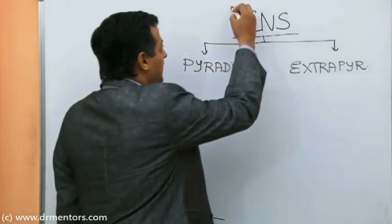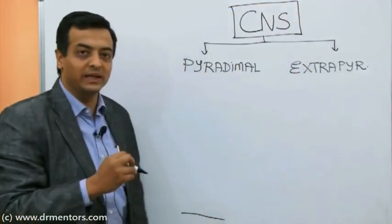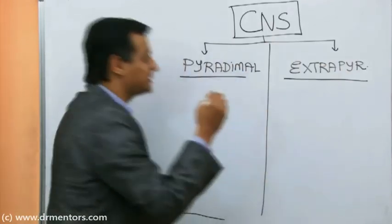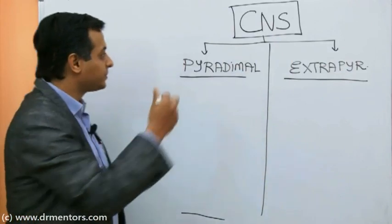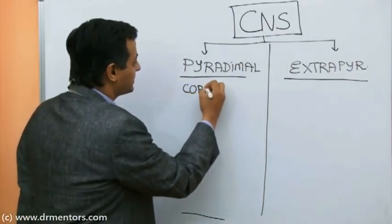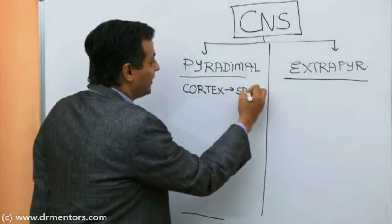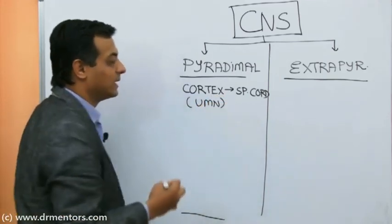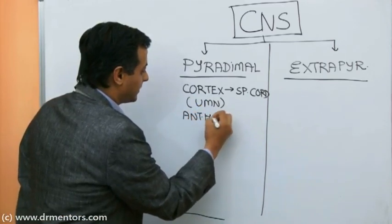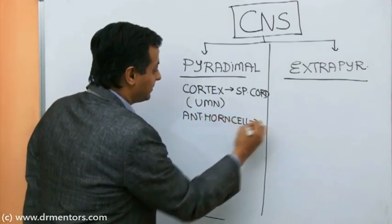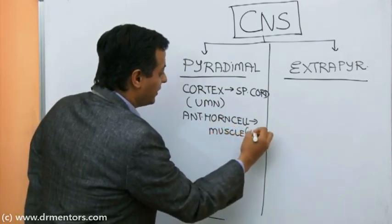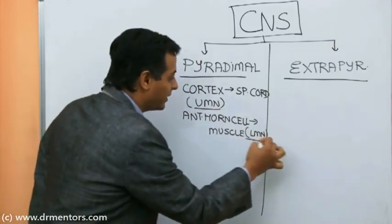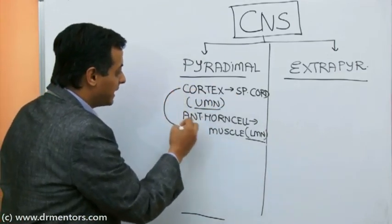So let me put you in the clinician's shoes. The patient has come with a focal neurological deficit. The first step is to differentiate: is the lesion in the pyramidal tract or the extra-pyramidal tract? The pyramidal system extends from the cortex all the way to the spinal cord — that is the upper motor neuron part — and from the anterior horn cell to the muscle, which is the lower motor neuron part.